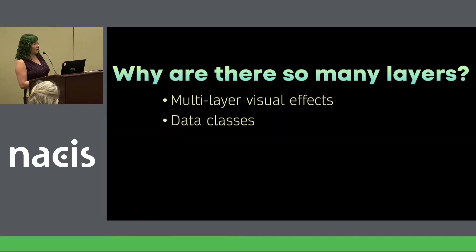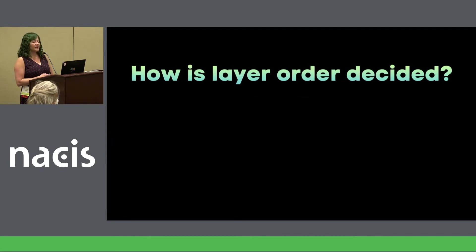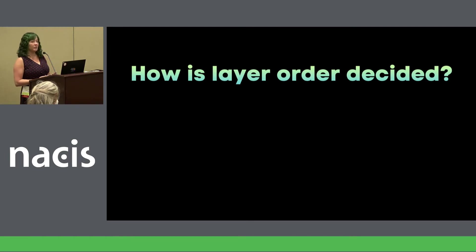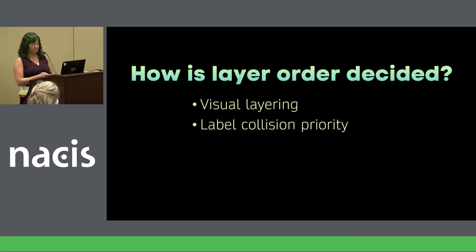So now you understand why there are so many layers in the map compared to the map data tiles. Next, I want to tell you more about how I order all of these layers — that is, deciding the order that the layers will appear in the style sheet. There are two main factors: visual layering and label collision priority.